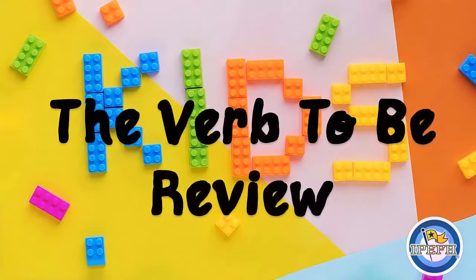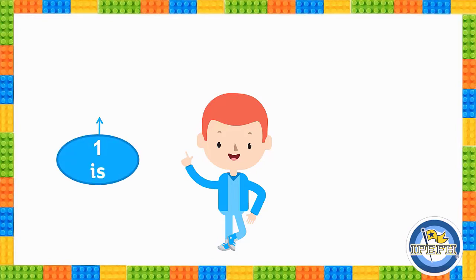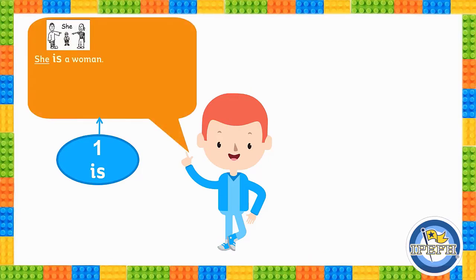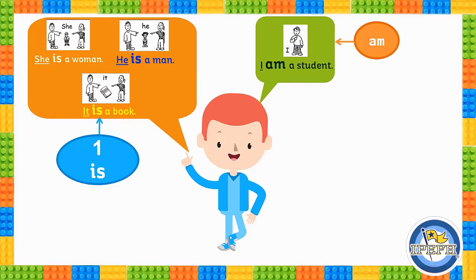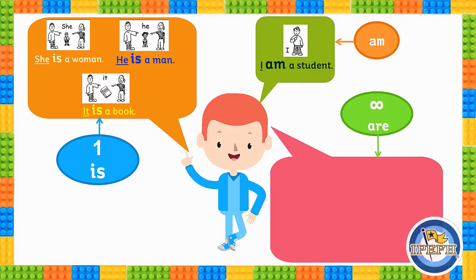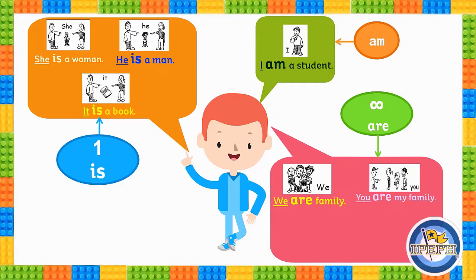Verb to be review. Let's remember, we have three bubbles for the verb to be. Bubble number one is for 'is': she is — she is a woman; he is — he is a man; it is — it is a book. Then we have the special bubble for I: I am — I am a student. And then we have the bubble for a lot of people, which uses 'are': we are — we are family; you are — you are my family; they are — they are grandpa and grandma.